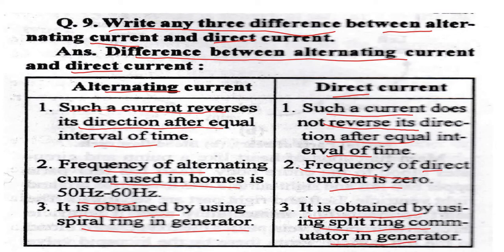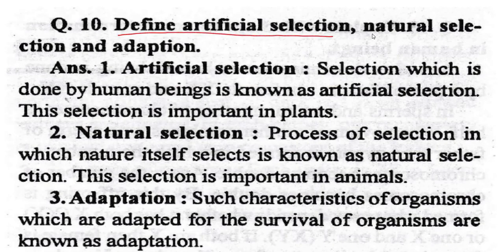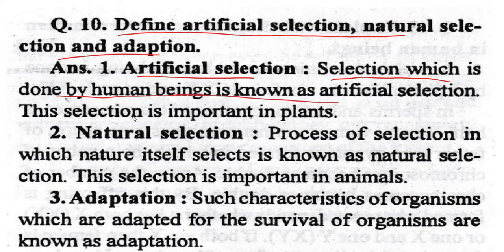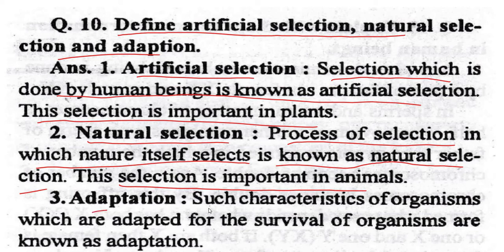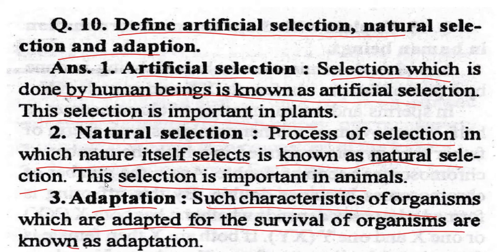Question No. 10. Define artificial selection, natural selection, and adaptation. Artificial selection: selection done by human beings, important in plants. Natural selection: process in which nature itself selects, important in animals. Adaptation: characteristics of organisms which help them survive in their environment.